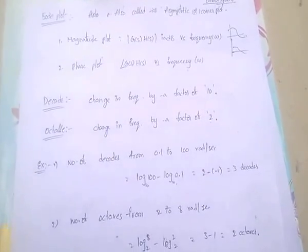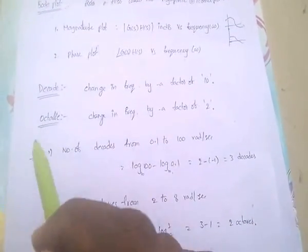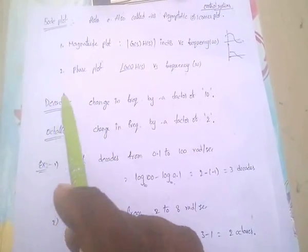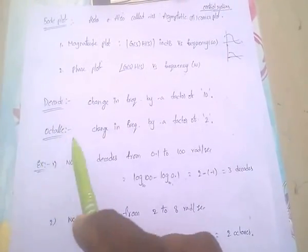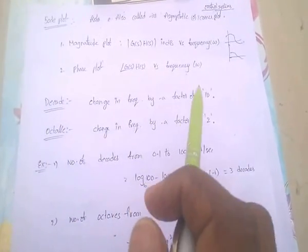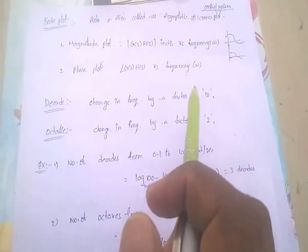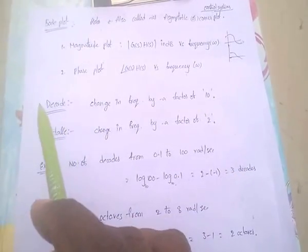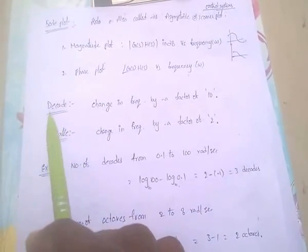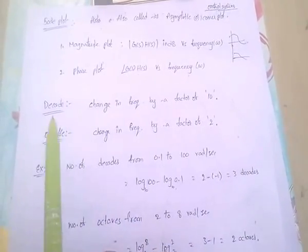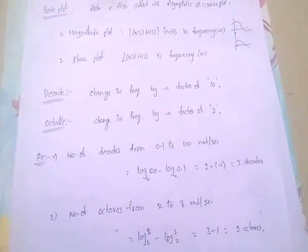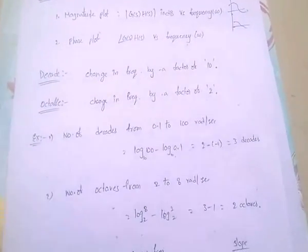Some terms regarding this Bode plot are decade and octave. What is a decade? It is a change in frequency by a factor of 10. In case of octave, it is a change in frequency by a factor of 2.